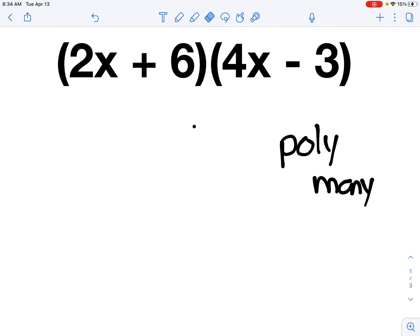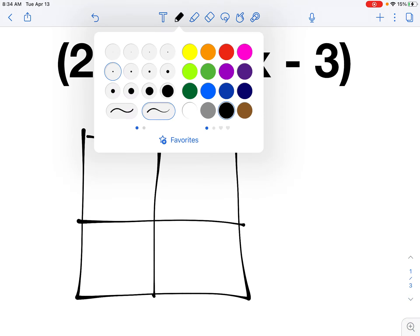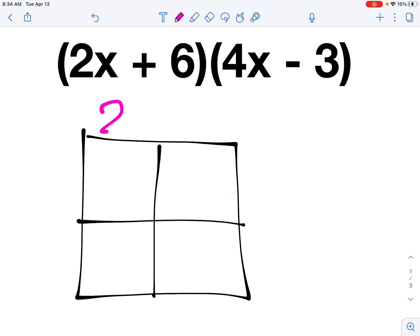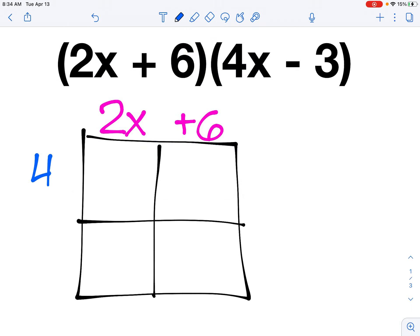When we multiply by binomials, we need to make sure that we're distributing everything in these first parentheses to everything in the second parentheses. So the way that I like to do this is using something called the box or the window method. The first thing I'm going to do is draw a little 2x2 box. And I'm going to label it with my first binomial across the top, 2x plus 6, and my second binomial down the side, 4x minus 3.